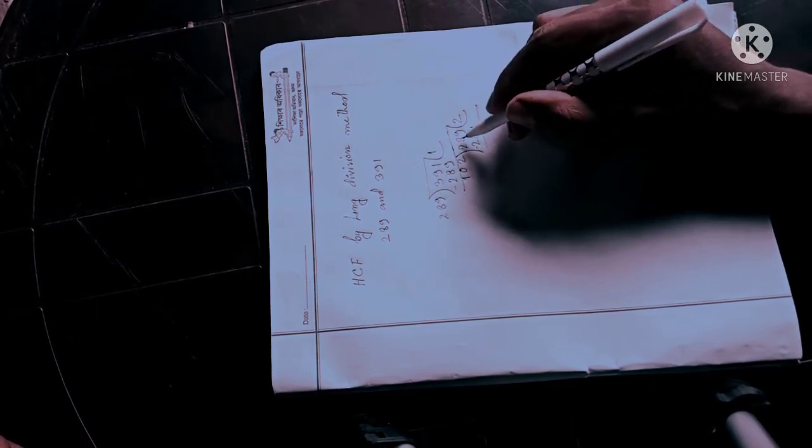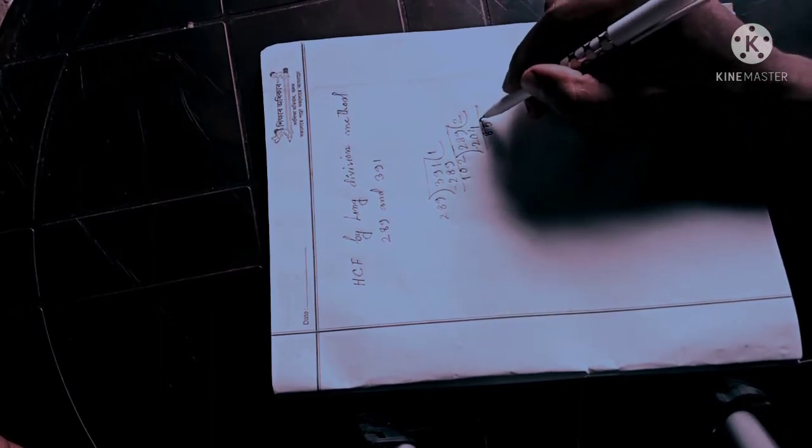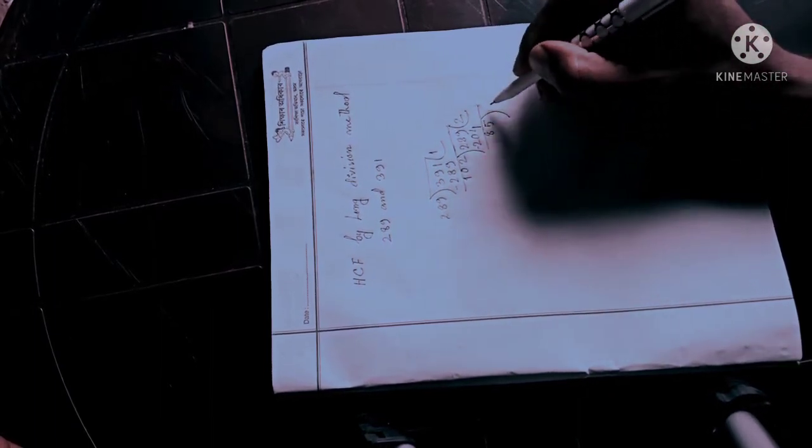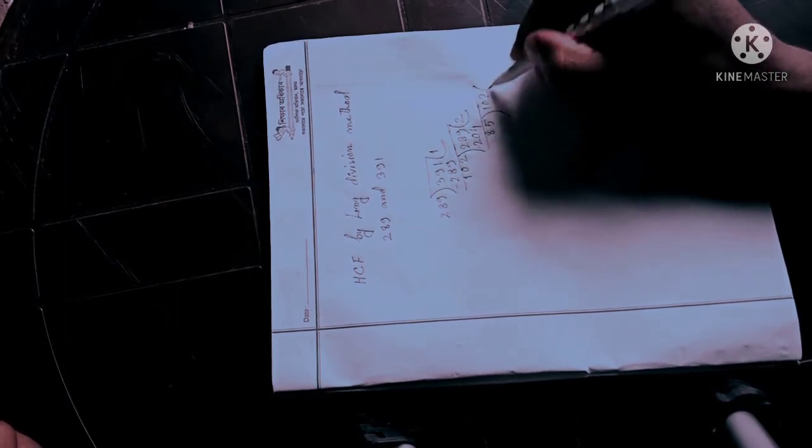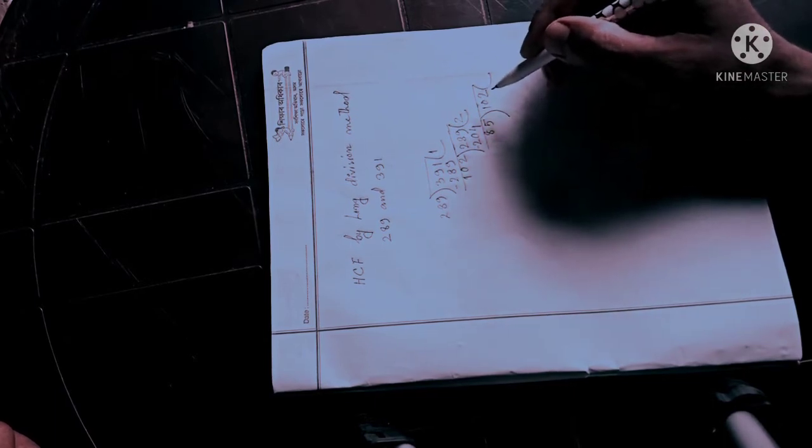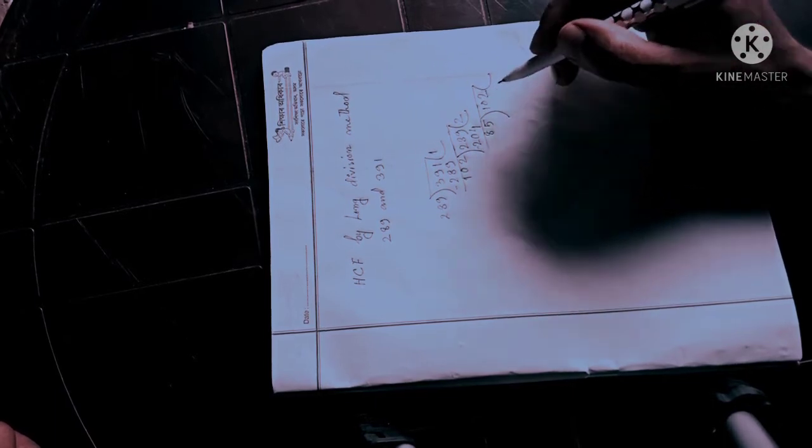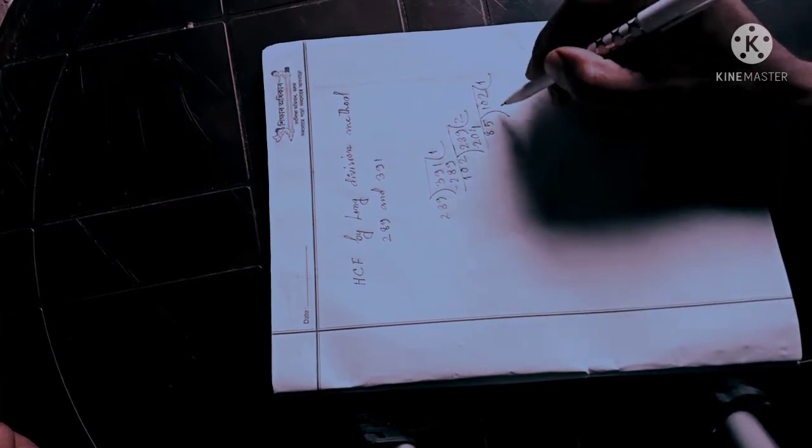8 minus 0 is 8. Now 102 divided by 85. Here also we have to go one time. 85 times 1 is 85.